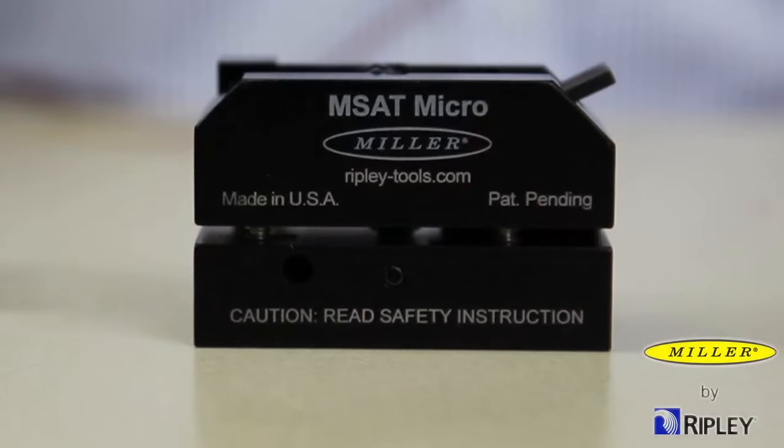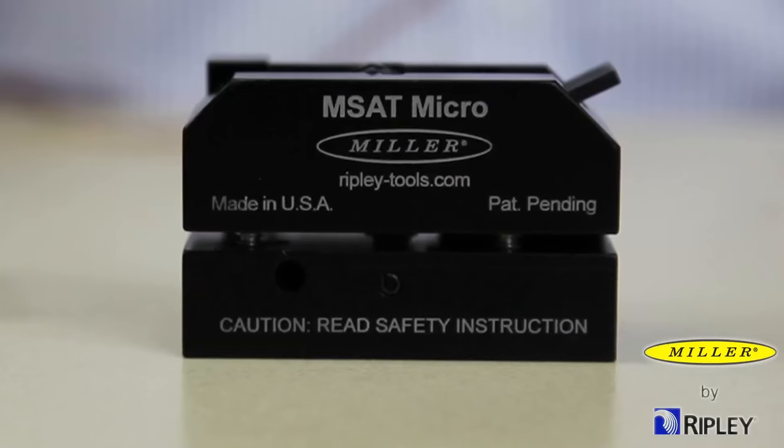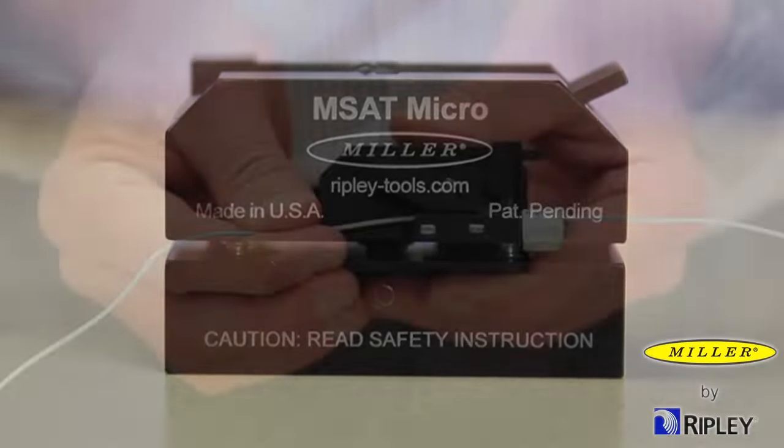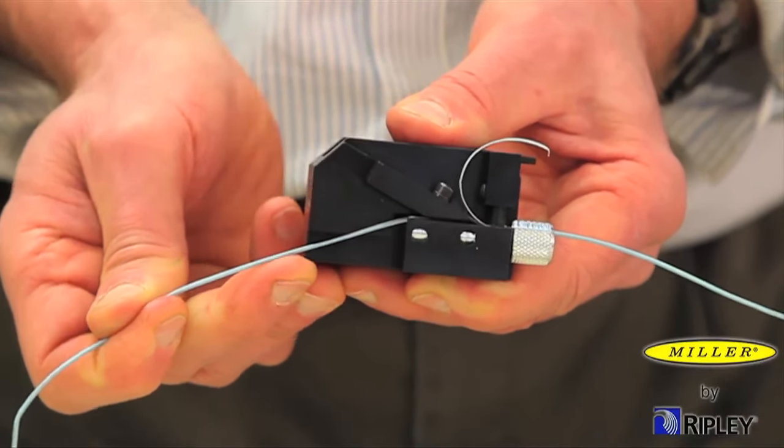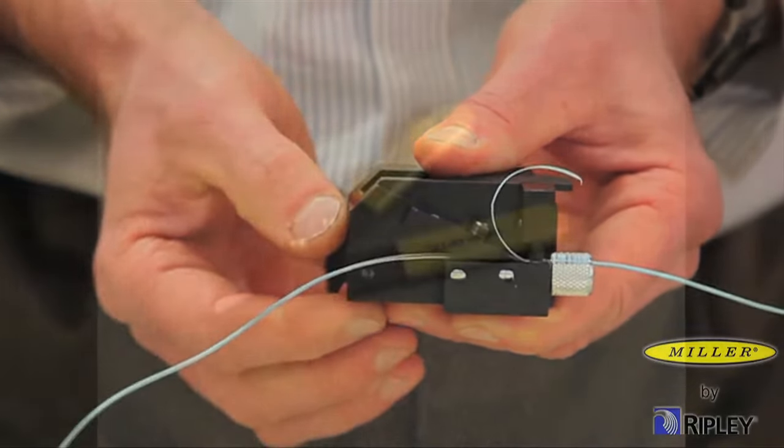The Miller MSAT micro mid-span access tool is compact, user-friendly, and provides quick and easy mid-span access on smaller buffer tubes without causing fiber damage.